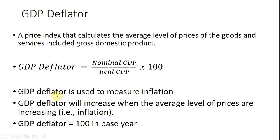The GDP deflator is fundamentally used to measure inflation or the inflation rate in the economy — it's just one of many measures that can be used for that. The GDP deflator will increase when the average level of prices are increasing, that is, the economy is experiencing inflation. The GDP deflator will always equal 100 in the base year, so in the next example, the GDP deflator will be normalized to 100 in the base year.